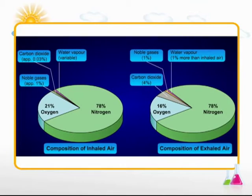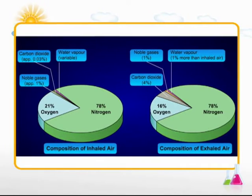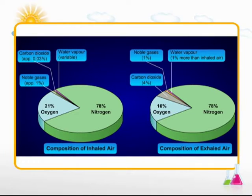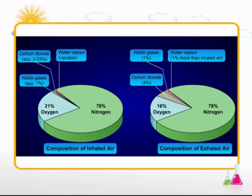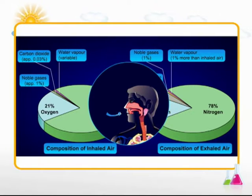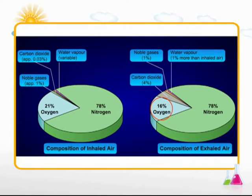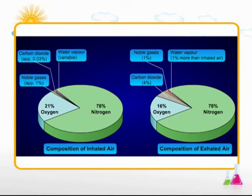The air we breathe in is called inhaled air and the air we breathe out is called exhaled air. These two pie diagrams depict the percentage of gases in inhaled and exhaled air respectively. Taking a close look at both pie diagrams, we observe that exhaled air has less oxygen than inhaled air, because oxygen is used up during respiration.